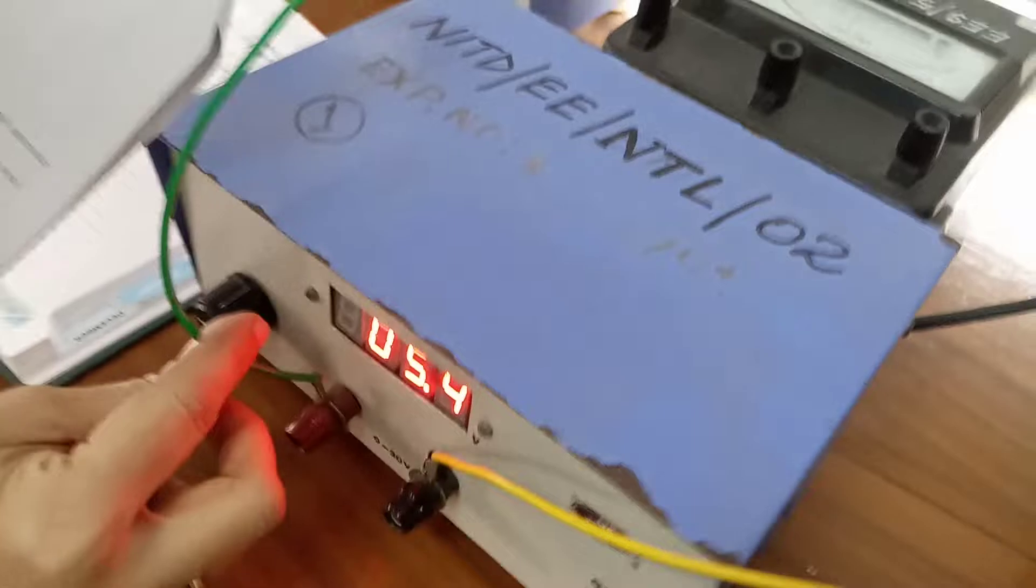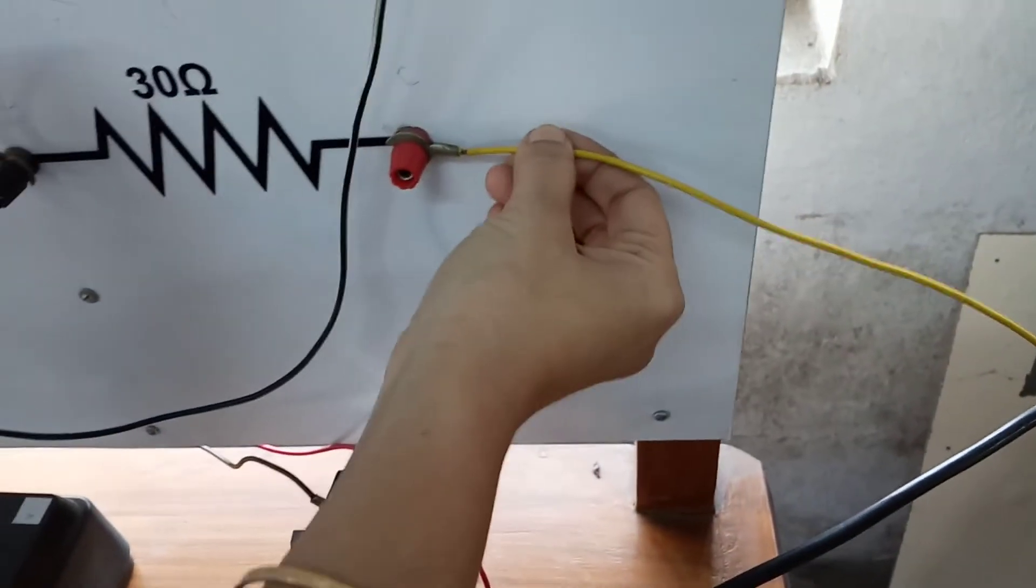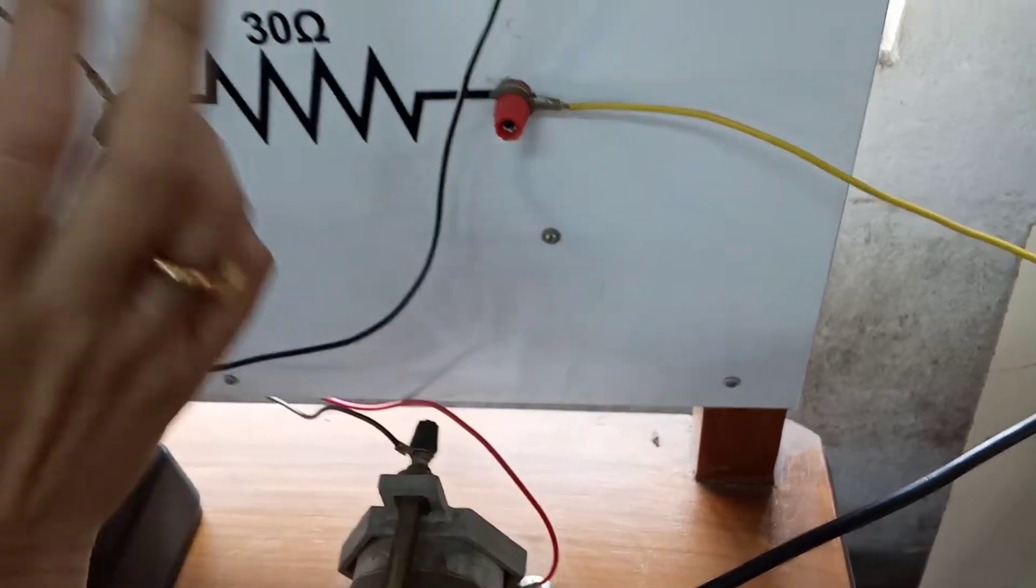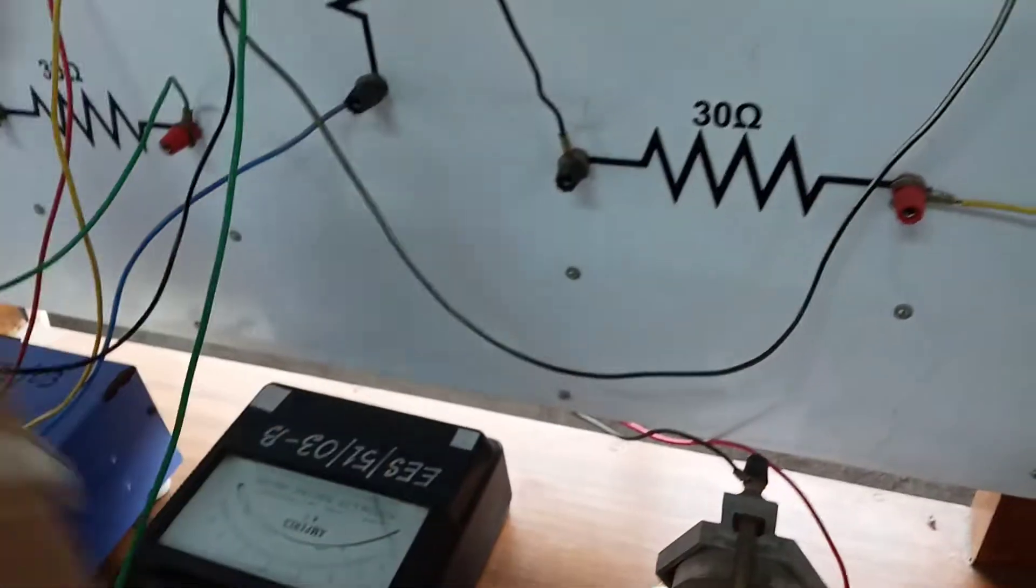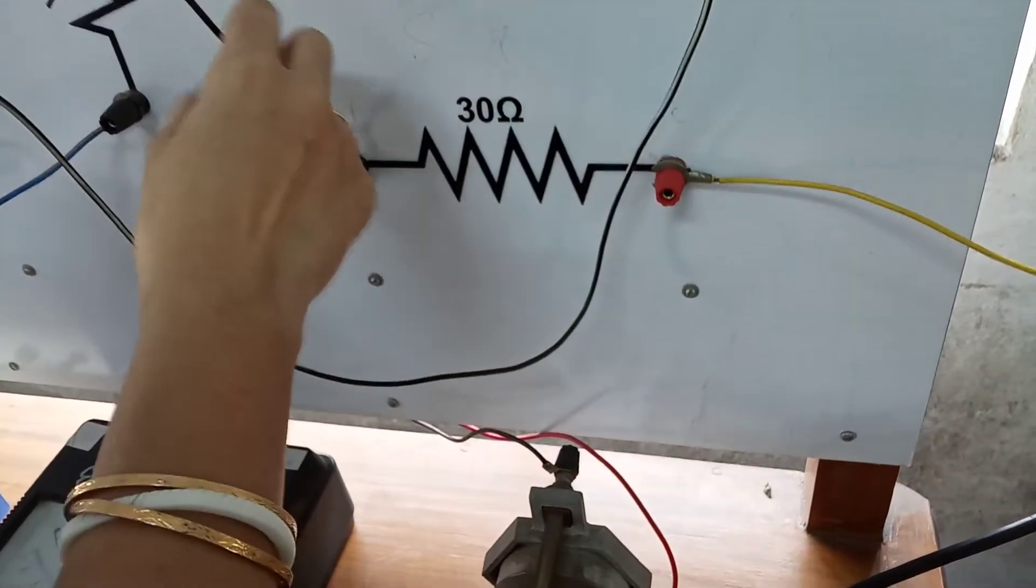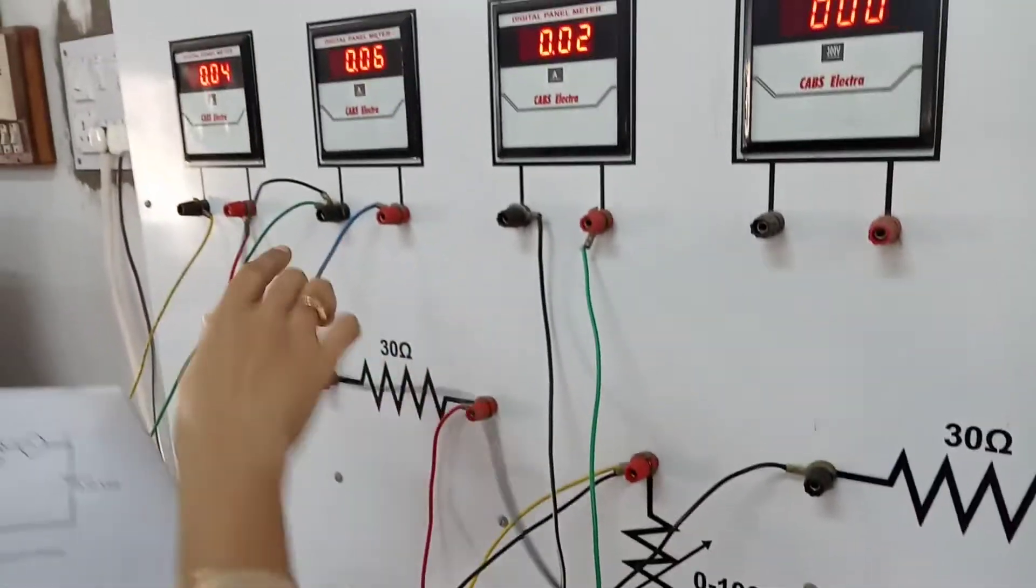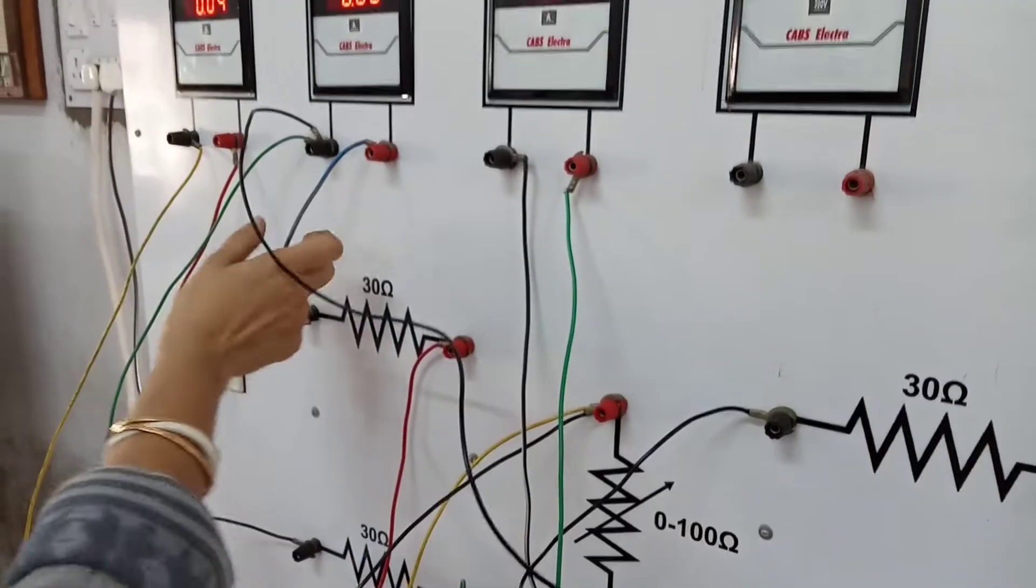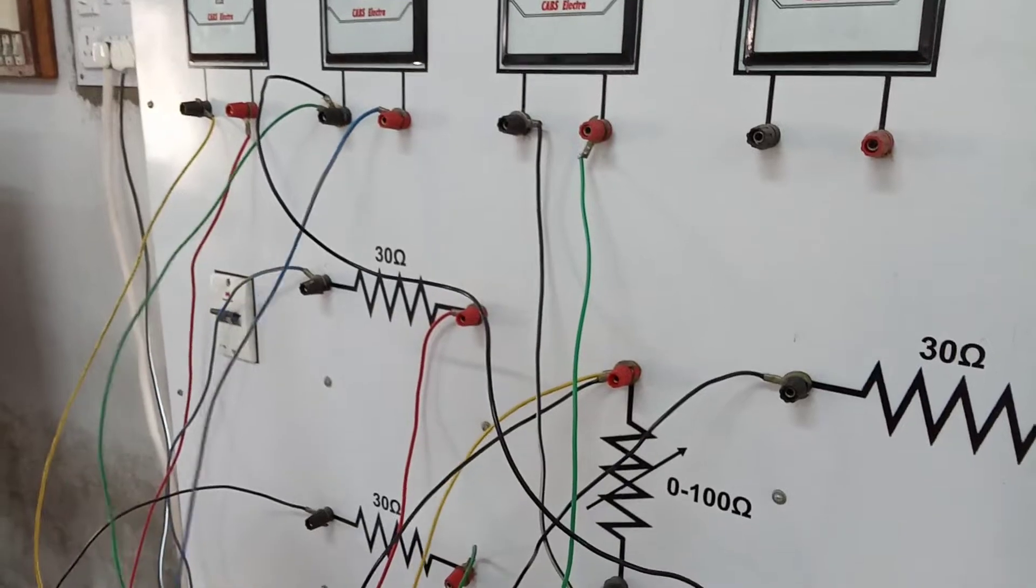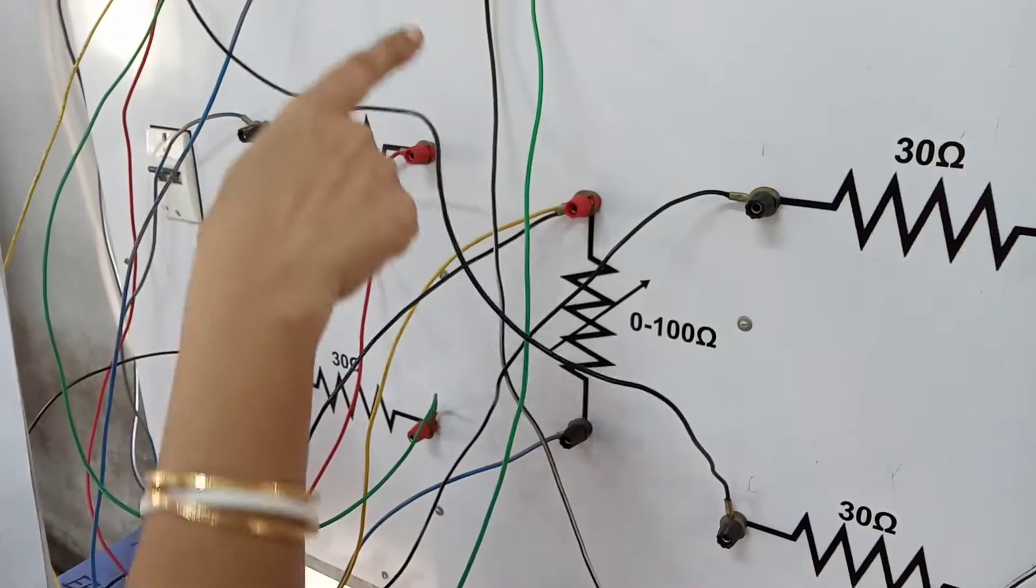From the other terminal of the ammeter, it is going to the source, and from the other terminal of the source it is connected here. Additionally, two resistances of 30 ohm are kept here. From across this terminal, it goes to the ammeter to measure the I3 branch current, and from the ammeter terminal it is going back. These three terminals are connected.